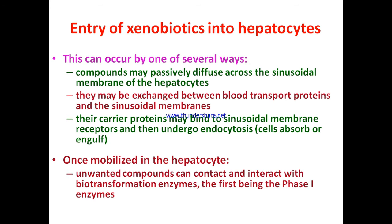Xenobiotics may passively diffuse across the membrane, and since the surface area exposed to blood is large, passive diffusion is common. Once a chemical diffuses into the liver and gets biotransformed, its concentration within the liver is kept low, which favors further diffusion. Xenobiotics may also be exchanged between blood transport proteins and sinusoidal membranes, or carrier proteins may bind to sinusoidal membrane receptors and undergo endocytosis.